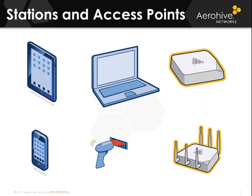Stations and access points must contend for the medium in the same manner. According to the standard, they are actually called access point stations and non-access point stations for this reason. Access points must perform clear channel assessments, and if the medium is not idle, they must back off and defer until the medium is idle. Access points also act as the point coordinator for the service set and allow access to the bounded medium.